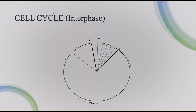In M phase there are two sub-phases: karyokinesis and cytokinesis. Karyokinesis has four phases — prophase, metaphase, anaphase, and telophase. Cytokinesis happens after karyokinesis. There is also a G0 phase which we will see at the end.